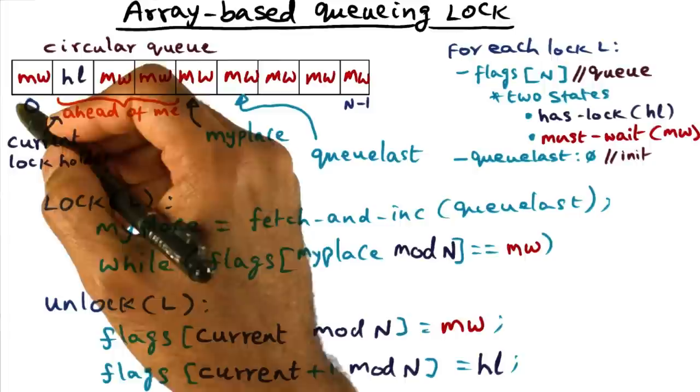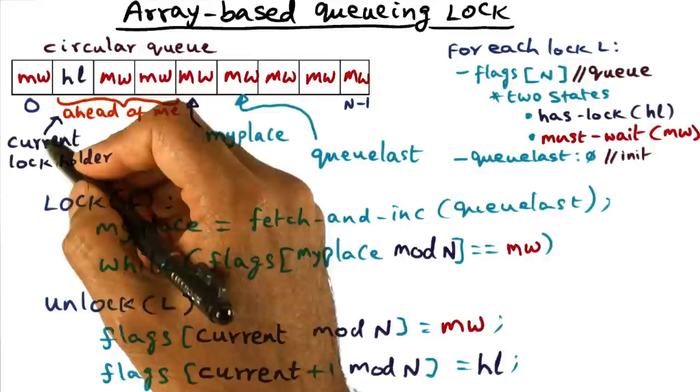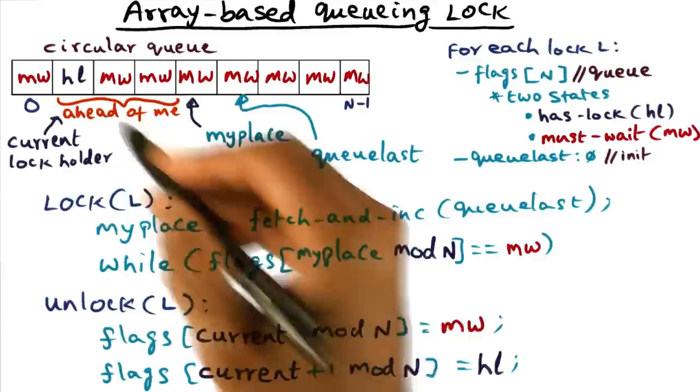The next thing that the current lock holder is going to do is signal the next guy in the circular queue. So the current lock holder was here, so he has marked it as MW for future requesters that may come and wait on his spot.